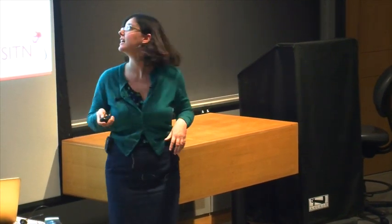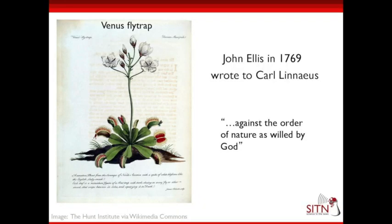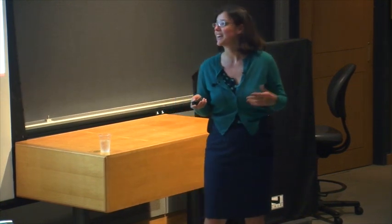John Ellis sent Linnaeus a letter with a dried specimen of a Venus flytrap and a beautiful picture he had drawn, saying: look at this amazing plant — it produces traps at the end of its leaves that look like rat traps, and we think they're there to catch flies and eat them. Linnaeus said no, that's not possible — that goes against the order of nature as willed by God; plants cannot eat and digest animals. And that was the state of things for almost 100 years until Charles Darwin started working on carnivorous plants.